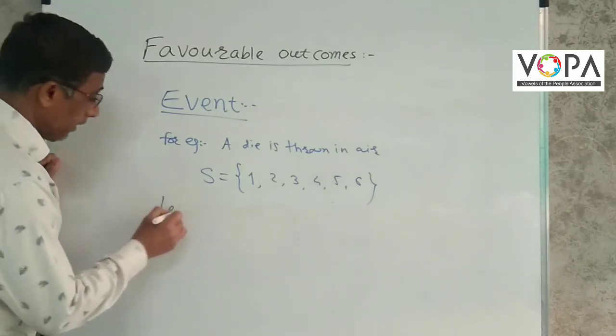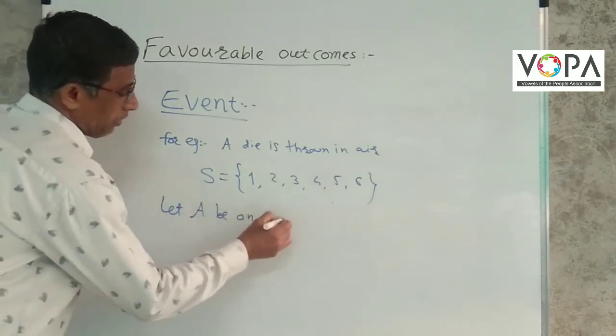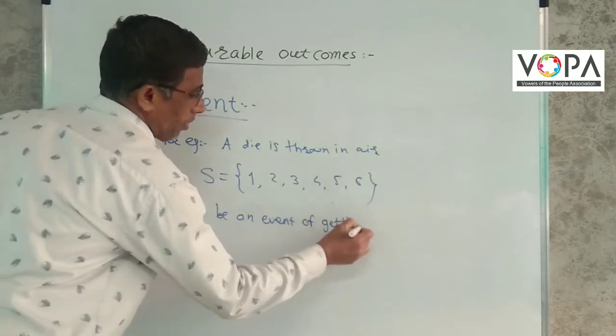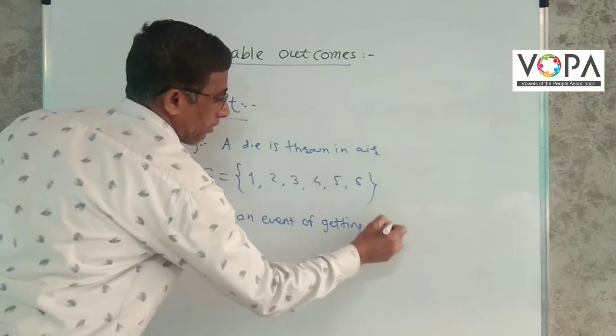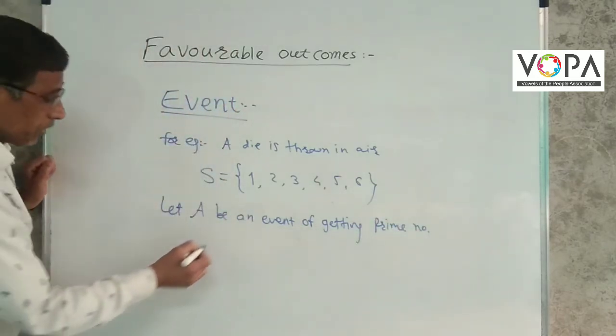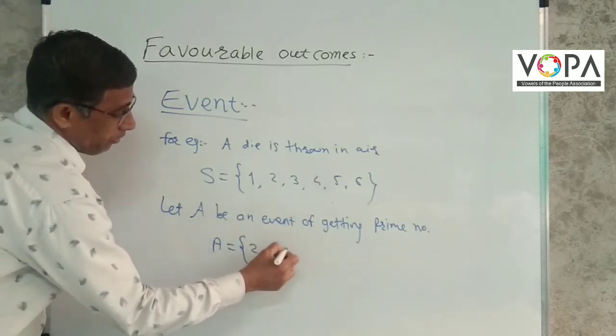Now, let A be an event of getting a prime number. So A equals 2, 3, 5.